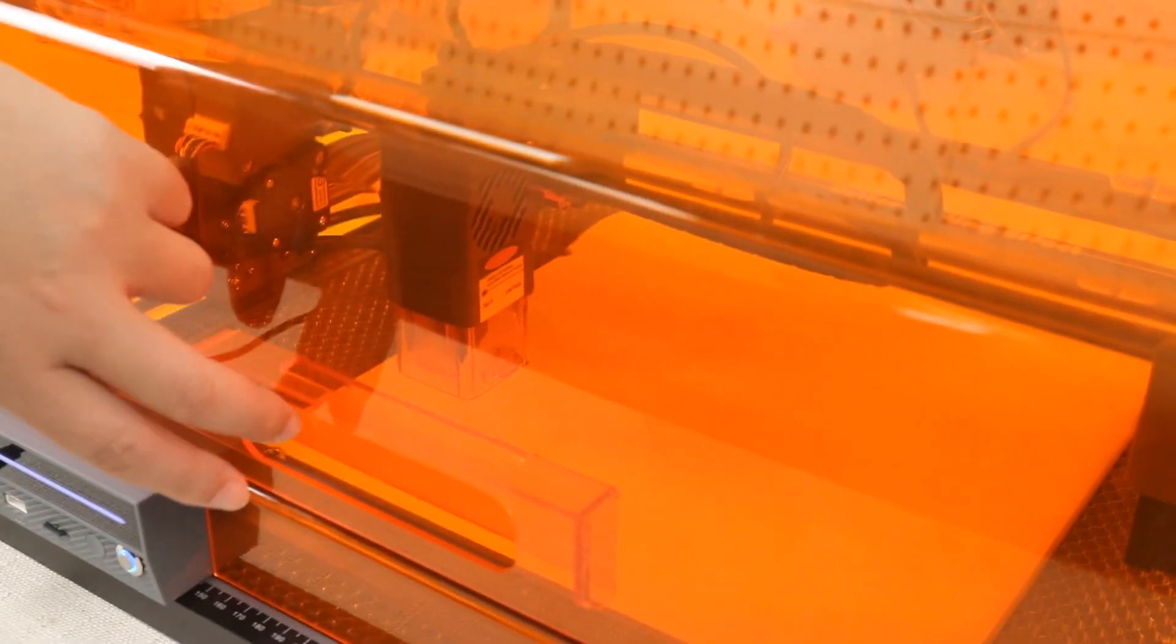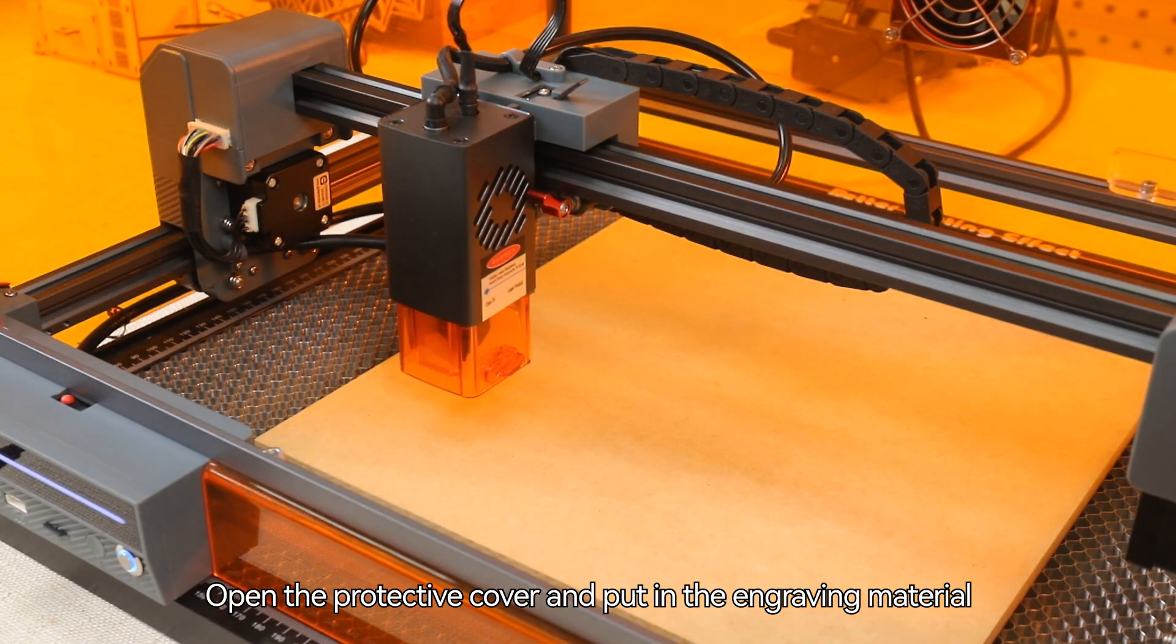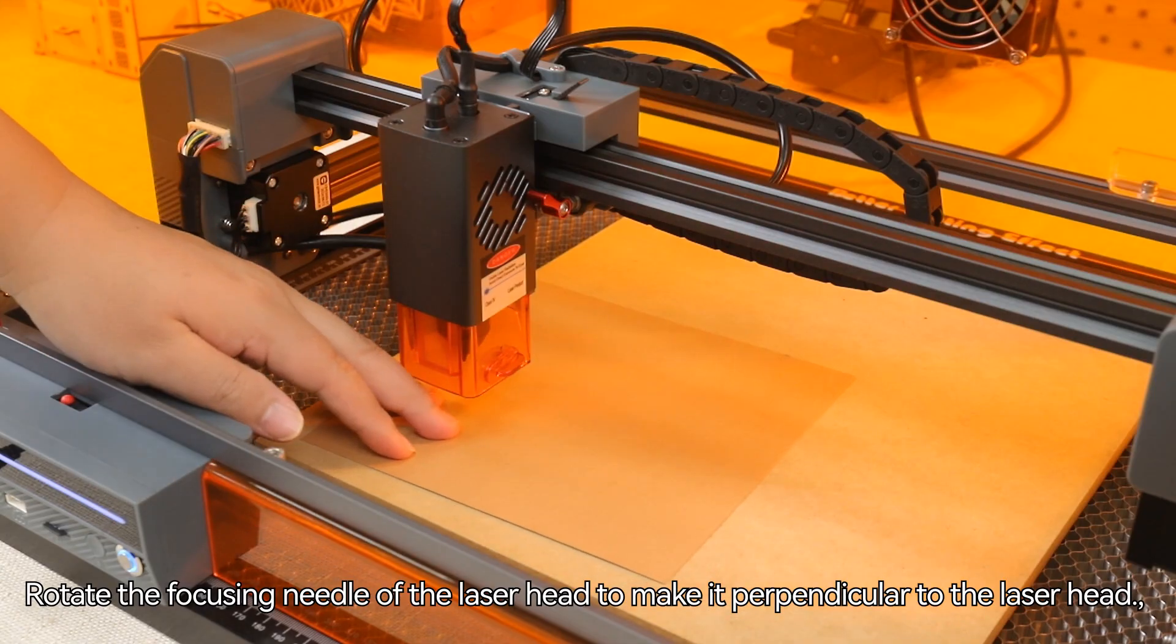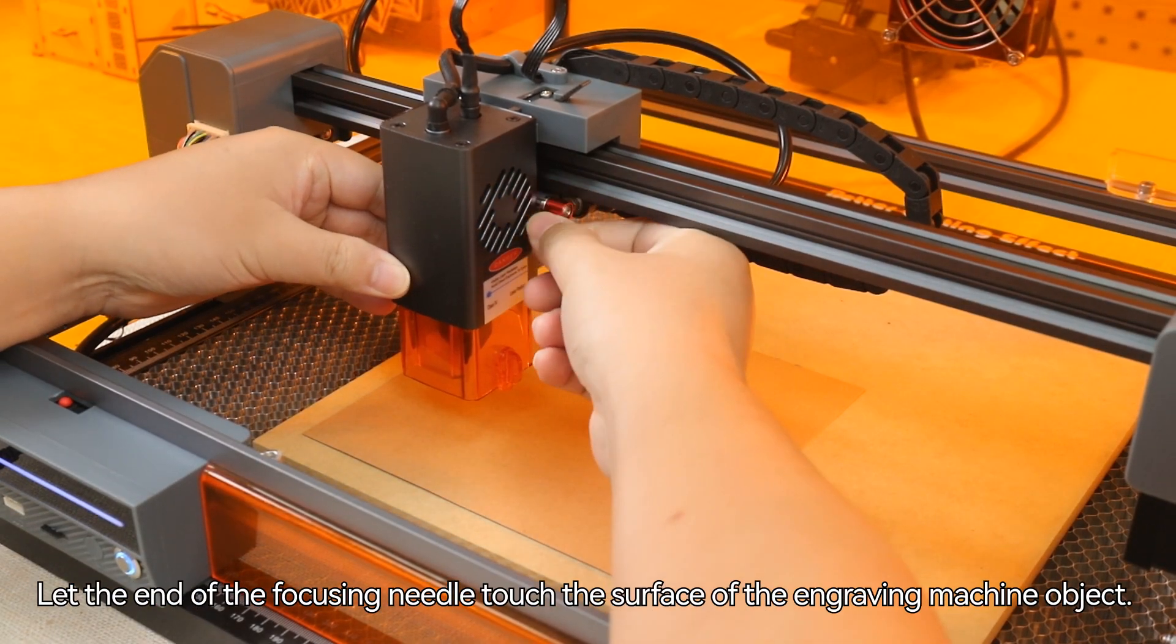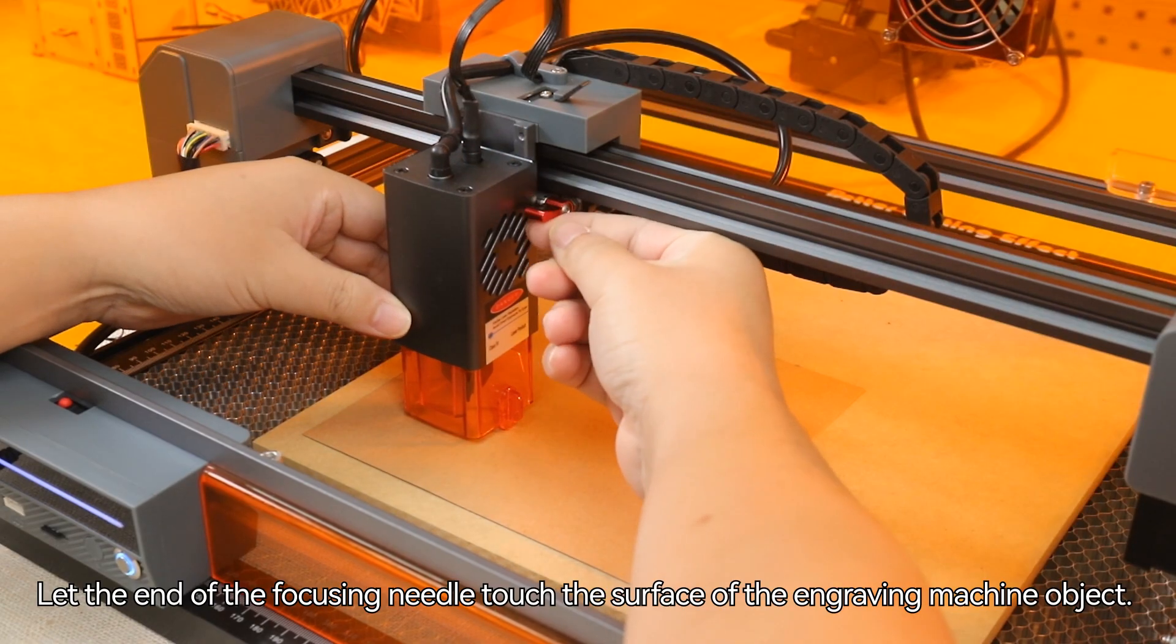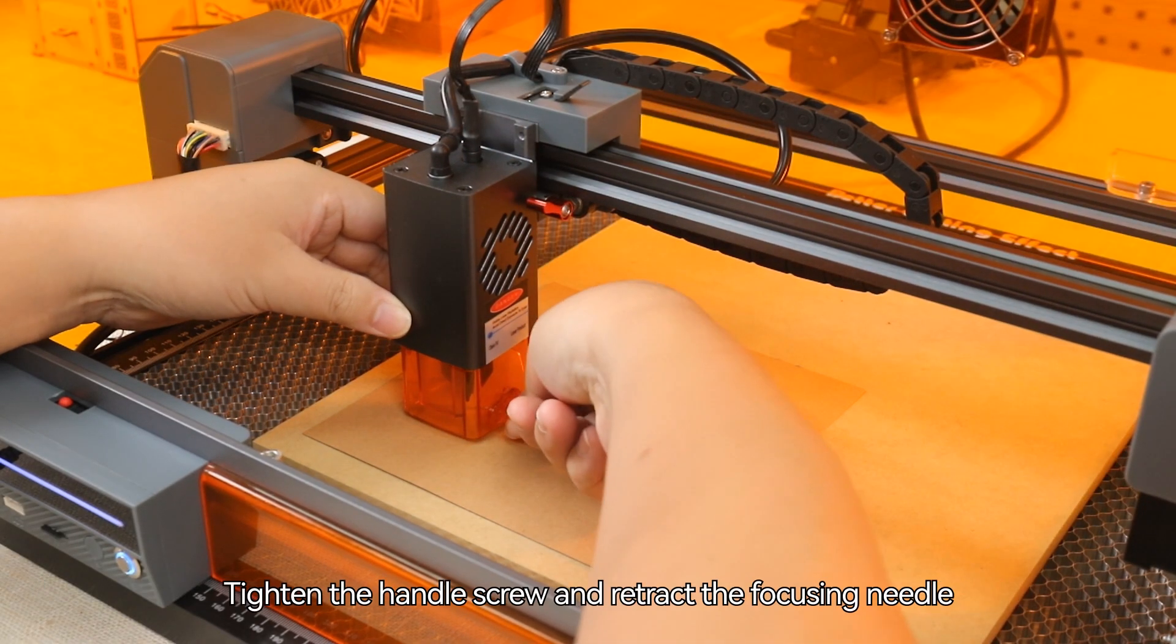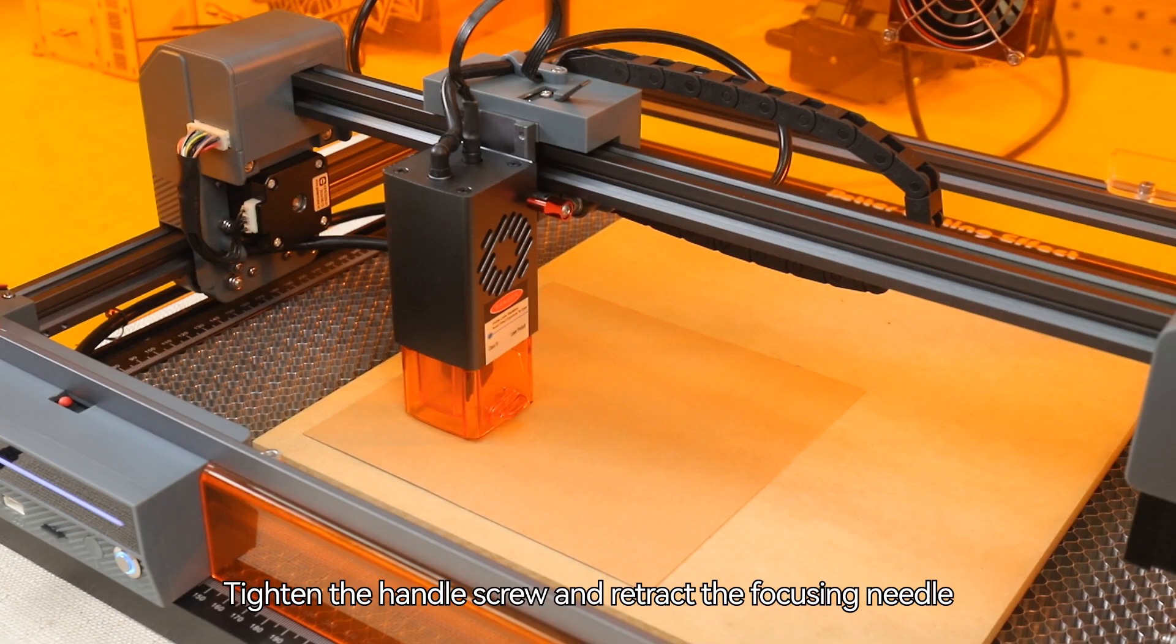Open the protective cover and put in the engraving material. Rotate the focusing needle of the laser head to make it perpendicular to the laser head. Let the end of the focusing needle touch the surface of the engraving object. Tighten the handle screw and retract the focusing needle.